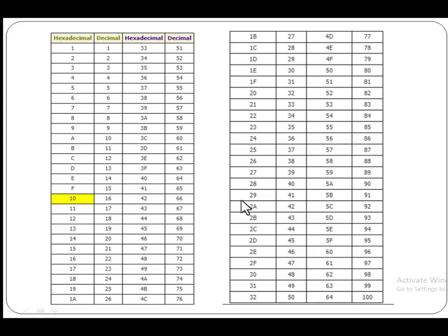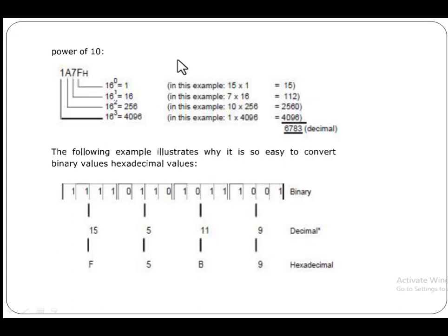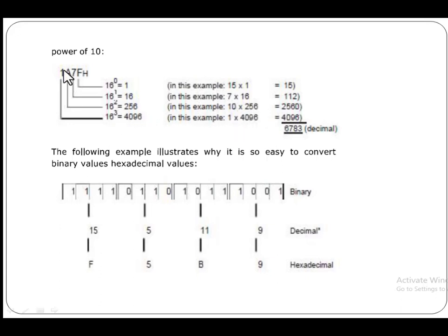It is very informative to understand the different number systems. For example, to convert a hexadecimal number to decimal, write the positional powers starting from 0: 16 raised to power 0 is 1, 16 raised to power 1 is 16, 16 raised to power 2 is 256, 16 raised to power 3 is 4096. Then multiply each hex digit by its corresponding power — F equals 15, so 15 multiplied by 1; then 7 multiplied by 16; then A equals 10, so 10 multiplied by 256; then 1 multiplied by 4096. Adding all these gives the decimal result.